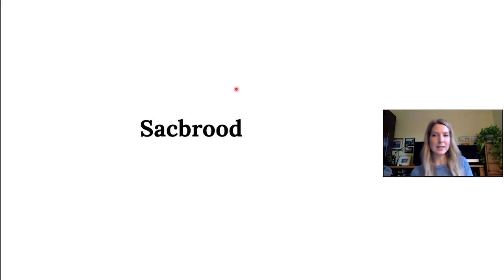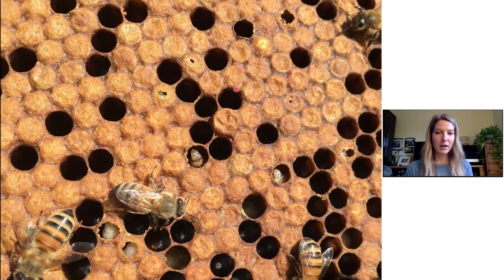Chalk brood is a little more common, and can be seen most often if colonies are weak, or if it's been a spring where the brood nest is growing rapidly and there aren't quite enough nurse bees to take care of all the brood. Sac brood — I don't really know if there is a seasonal trend; we don't come across it often enough to determine that.